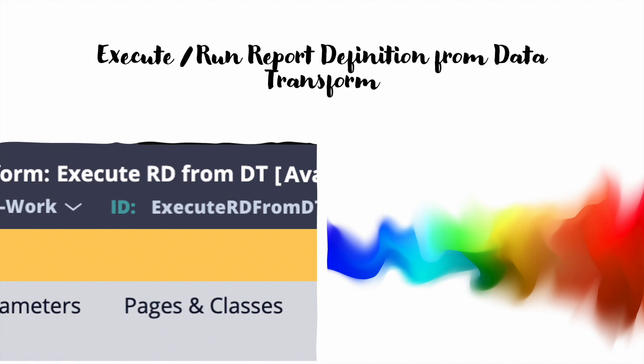Hello everyone, good evening. Today we are going to learn a quick topic — how we can execute report definitions from a data transform. This is a very common use case. Everyone says we should not use activity, but sometimes we need to execute report definitions from data transform. You can argue that you can do the same thing using data pages, but sometimes you may need to directly call report definitions from data transform.